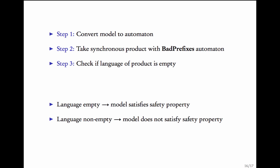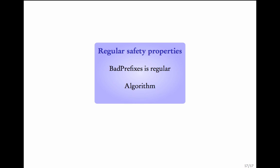Here is the gist of the algorithm. We are given a model and a regular safety property represented by an automaton for the set of bad prefixes. Step 1: convert the model into an automaton by moving labels on states to the outgoing edges. Step 2: take a synchronous product with the bad prefixes automaton. Step 3: check if the language of this product is empty. If it is empty, the model satisfies the property; if not, the model does not satisfy the property. This brings us to the end of this unit. We learned how automata can describe safety properties — called regular safety properties — and saw an algorithm to check if a regular safety property holds on a model.